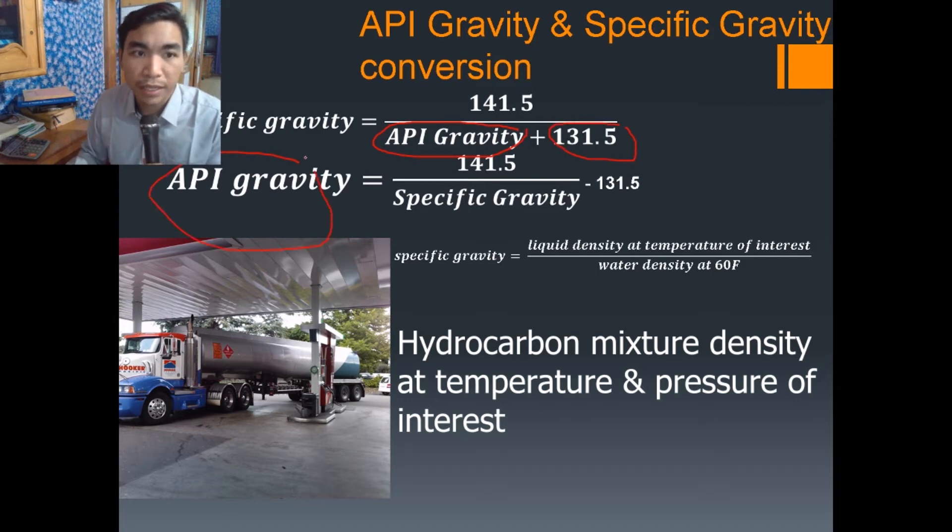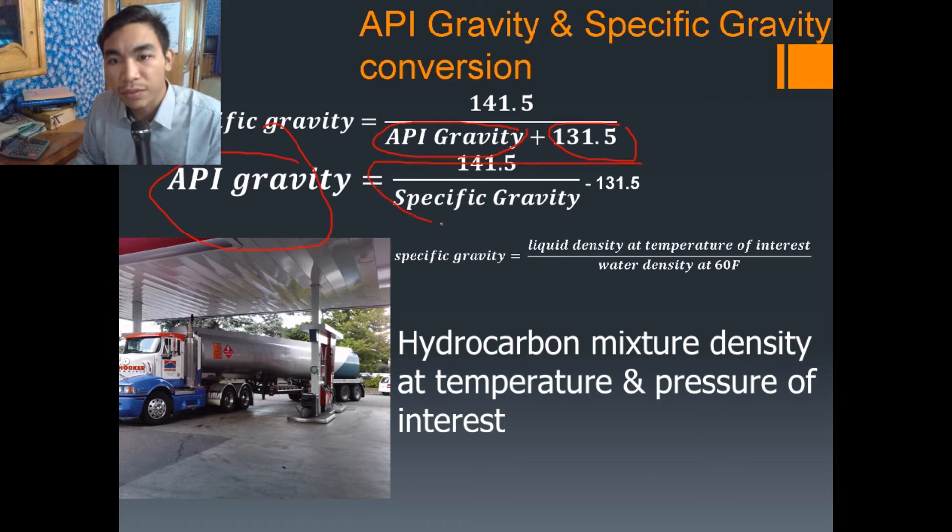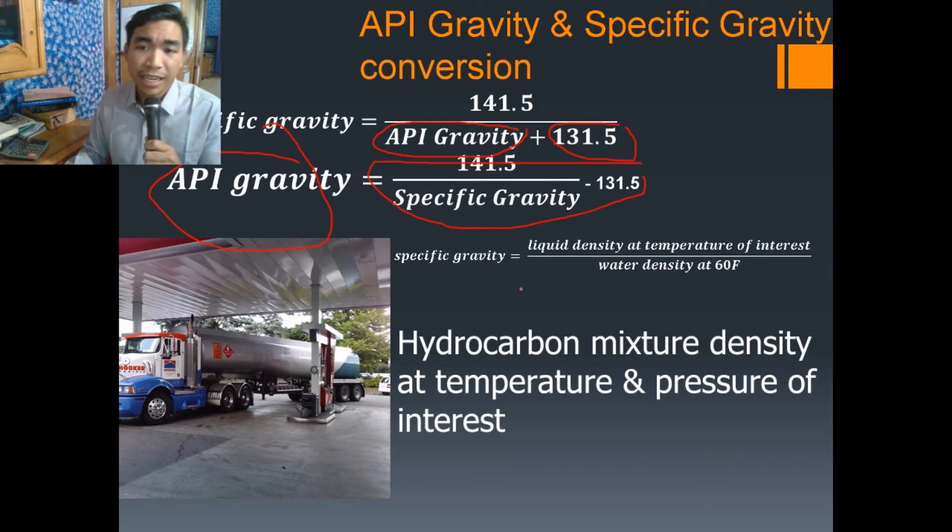And API gravity can be converted back to specific gravity vice versa. I'm sure you can develop an Excel spreadsheet for that easily. Just as a reminder, specific gravity is the liquid density at temperature of interest divided by water density at 60 degrees Fahrenheit.